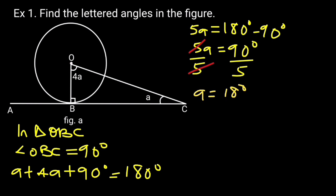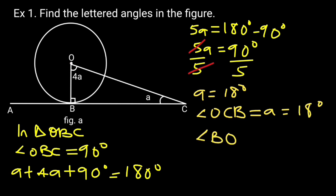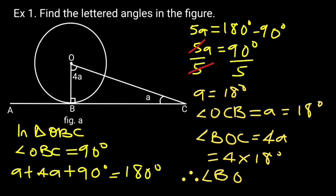Hence angle OCB is equal to A, which is equal to 18 degrees. Angle BOC is equal to 4A, which is 4 times 18. Therefore angle BOC is equal to 72 degrees.